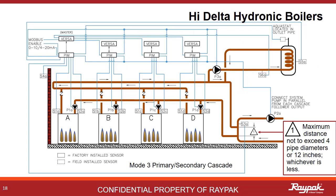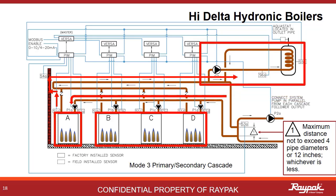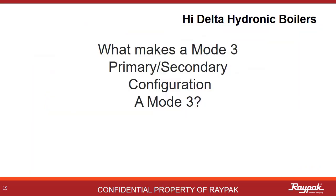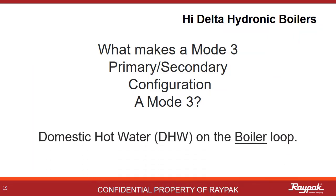Mode 3 can also be run in cascade. Here the A boiler is the master boiler and the others are followers. Being a multiple boiler cascade system, reverse return plumbing logic applies. It is a Mode 3 because the indirect domestic hot water system is on the boiler loop. What makes a Mode 3 a Mode 3 is that it must be plumbed primary-secondary and must have an indirect domestic hot water system on the boiler loop.